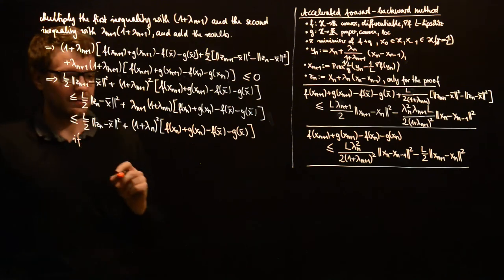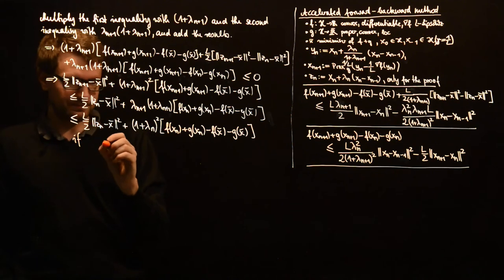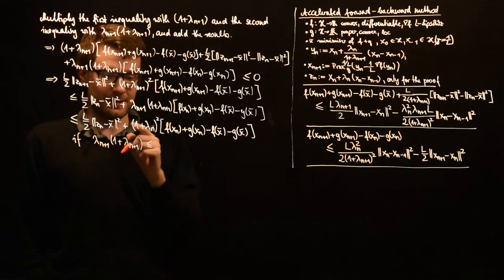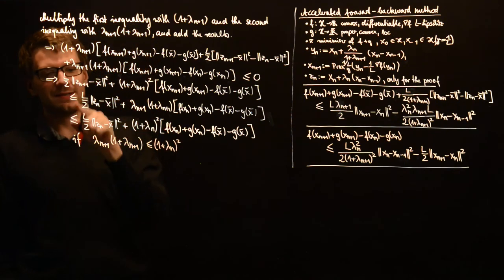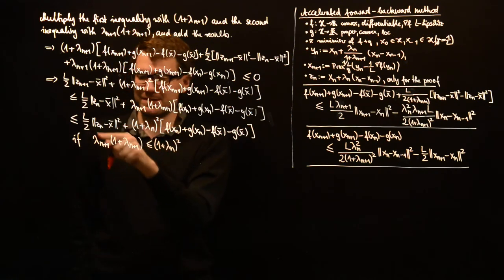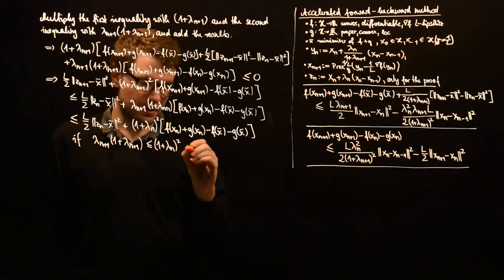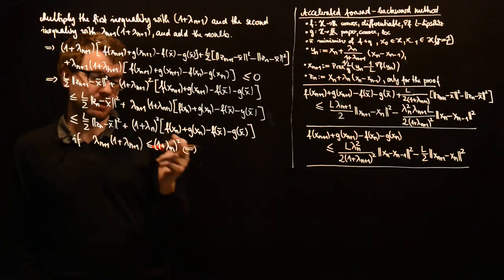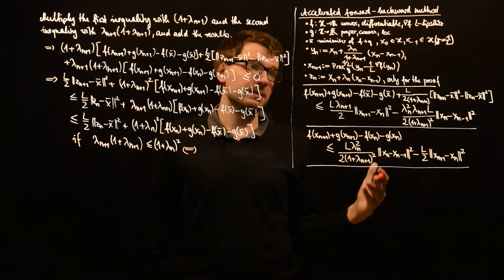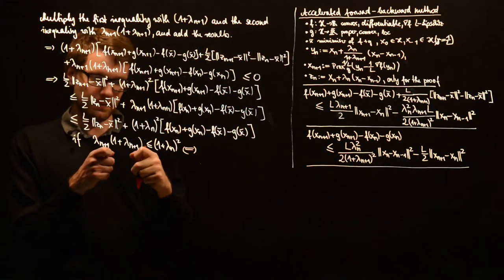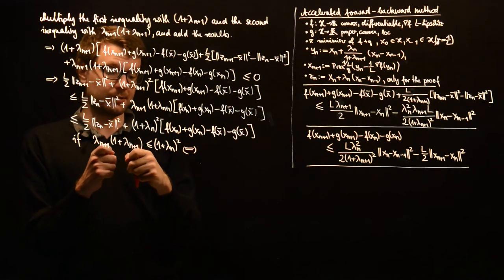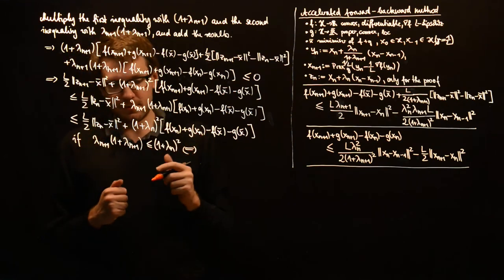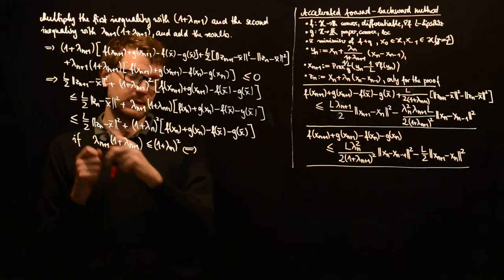We need λ_{n+1}(1 + λ_{n+1}) ≥ (1 + λ_n)², because that is what we used and it must be satisfied. This is a quadratic inequality, and it represents our last degree of freedom in the algorithm since we have not yet specified what λ_n and λ_{n+1} should be. This gives us the possibility to calculate or choose λ_{n+1} from λ_n by solving this quadratic inequality.